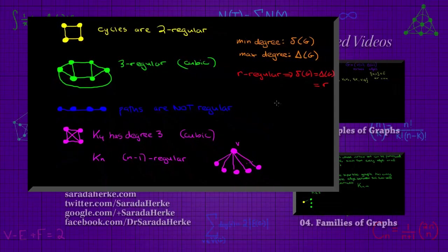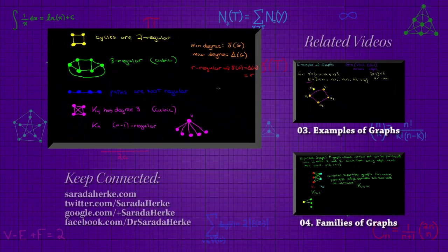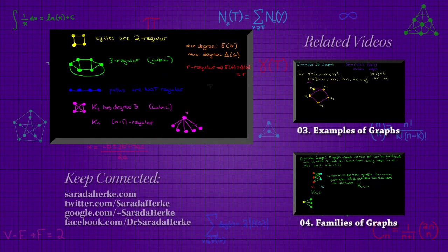So by now you should be quite familiar with the terms r-regular, two-regular, cubic, and related terminology. You should understand what a connected graph is and what an r-regular graph is. We will continue to use these types of words and terminology in the next videos. See you next time.